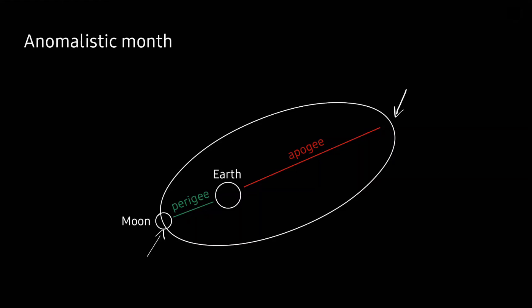In October 2023 we will have an annular solar eclipse because the Moon will be further away from the Earth, blocking less sunlight. In April we will have a total solar eclipse because the Moon will be closer to the Earth, near its perigee. The anomalistic month equals 27.554550 days, or approximately 27 days, 13 hours, 18 minutes, and 33 seconds.